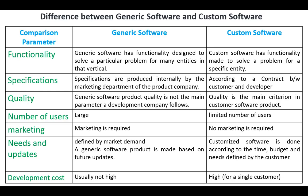Regarding needs and updates, generic software is defined by market demand and is built with future updates in mind. Customized software is done according to the time, budget, and needs defined by the customer. Development costs are not high in generic software, while they are high in custom software because a single organization or client has to pay all the costs.